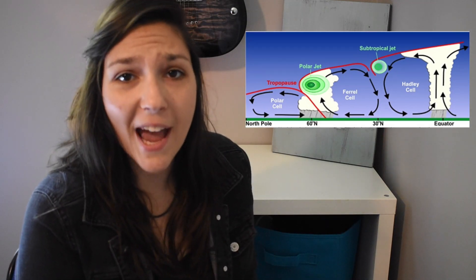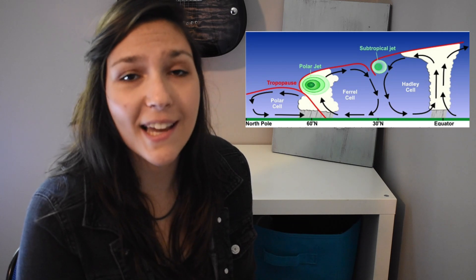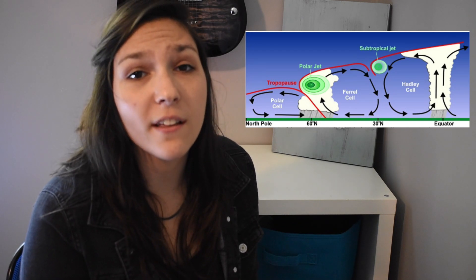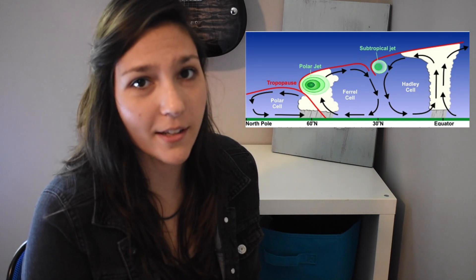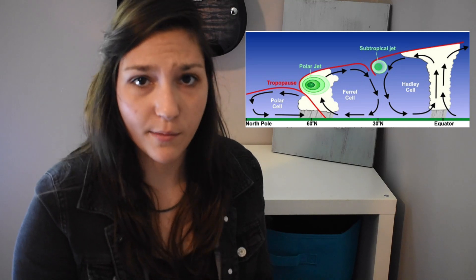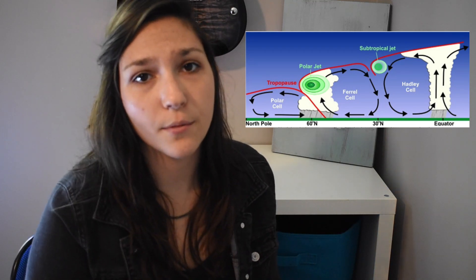From this diagram, you can see that the Hadley and polar cells both rotate counterclockwise, while the Ferrel cell in the middle rotates clockwise. This causes an area of rising motion between two of the cells and sinking motion between the other two. These areas where the cells meet are called the jet streams.